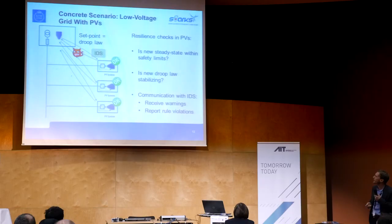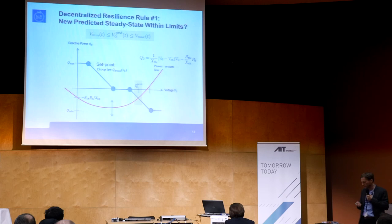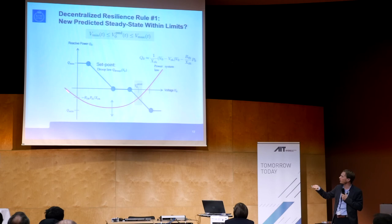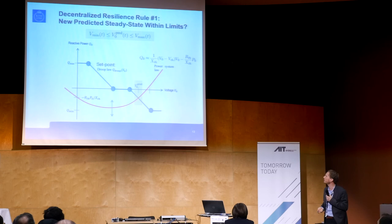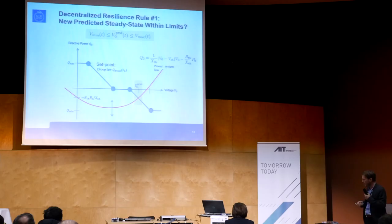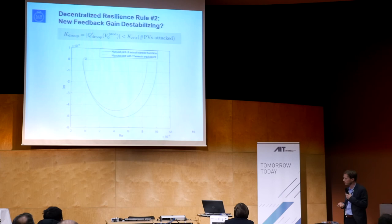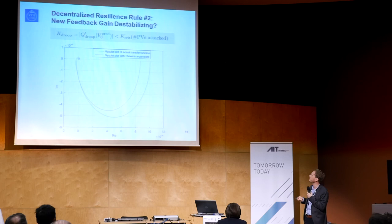Here's how the first rule works. The anti-islanding system gives you a simple model of the power grid. You receive a set point — that's the command. The crossing point on the curve is the predicted new voltage you would have if you implement that command. Is this within limits or not? If it's not, you don't execute it or you send a warning. That's the first simple decentralized test. For the second test, you use the Nyquist stability test to check the gain — basically the slope of this curve. If the slope is too high, you can get unwanted oscillations, as you will see in the demo.